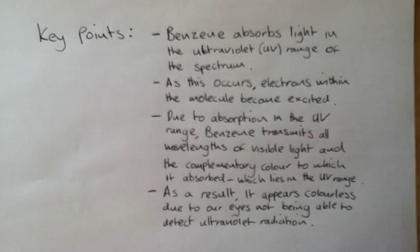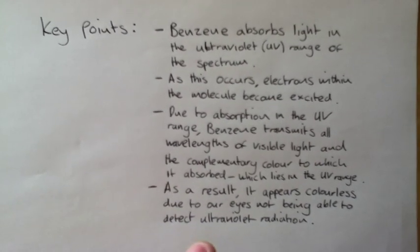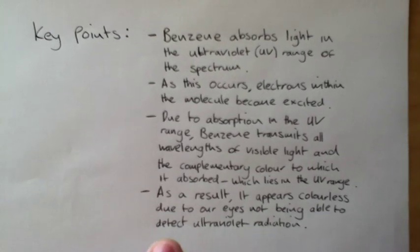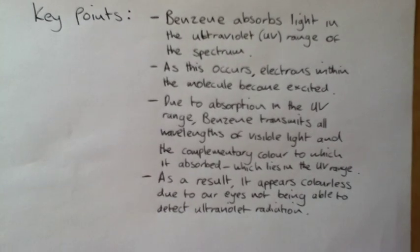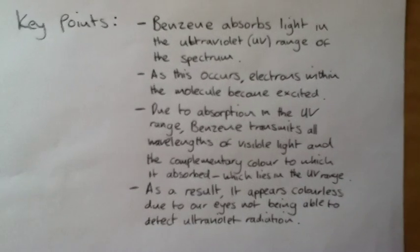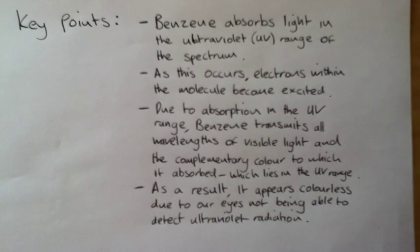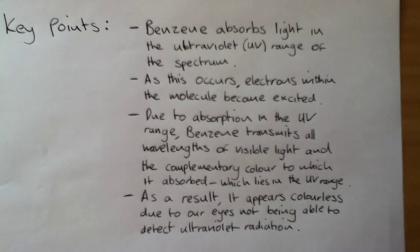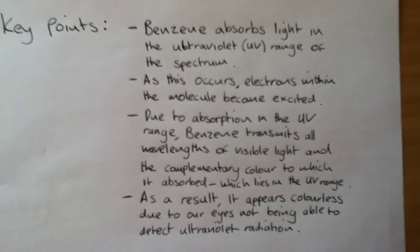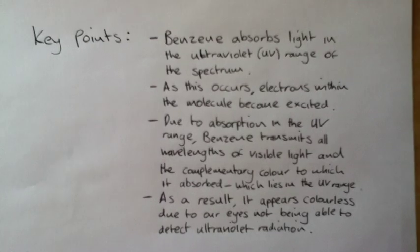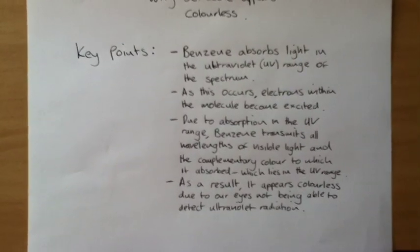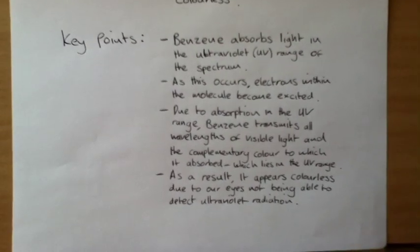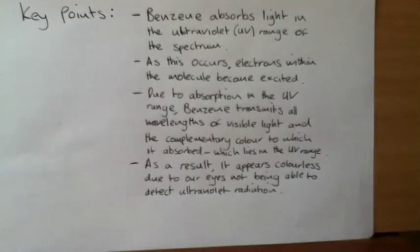And the reason it appears colourless to us is because it transmits all wavelengths of visible light and it transmits a complementary colour which lies in the UV range. And because our eyes can't detect UV, we can't actually detect the colour coming off benzene. And that's why it appears colourless to us.